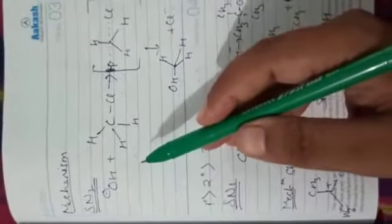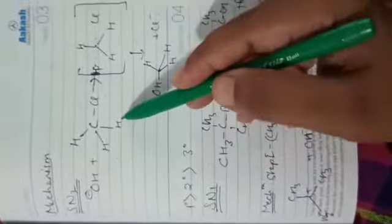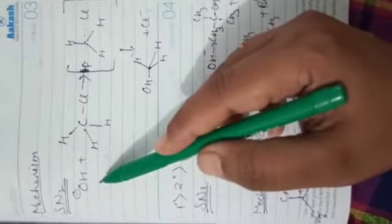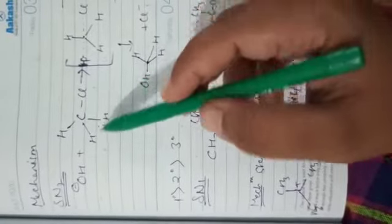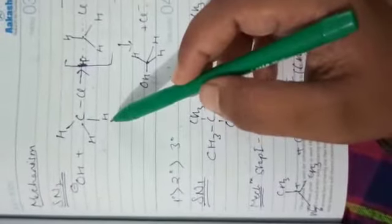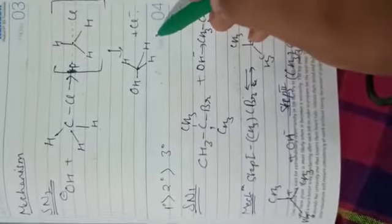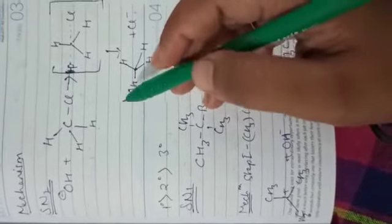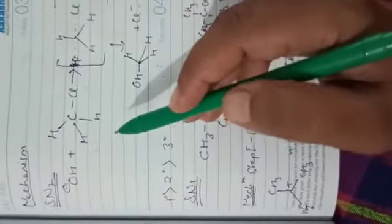In the SN2 mechanism, consider the reaction between methyl chloride and the hydroxide ion. This reaction yields methanol and a chloride ion. This reaction follows second-order kinetics, meaning the rate of the reaction depends on the concentration of both reactants.